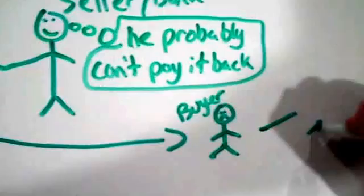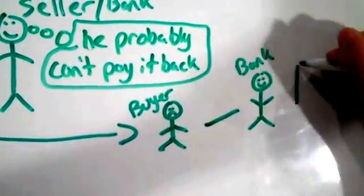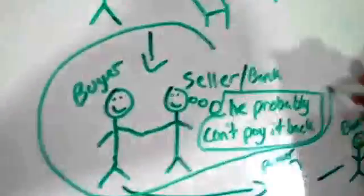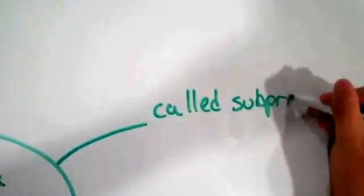But if the buyer defaulted, the bank would get a property asset whose value is constantly rising. These loans are known as subprime mortgages, given to people with bad credit ratings.